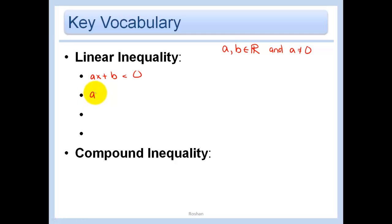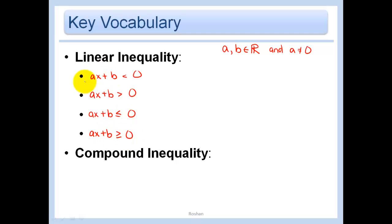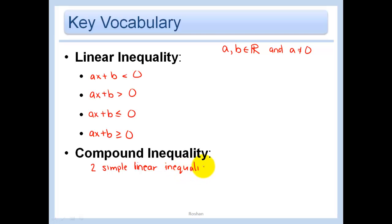AX plus B is greater than zero. AX plus B is less than or equal to zero. And AX plus B is greater than or equal to zero. So we knew that these were equations of lines — anything in the form Y equals AX plus B would be a linear equation — and now we've just made it into an inequality. A compound inequality means you take two of these simple inequalities and join them by either the word 'and' or the word 'or.'